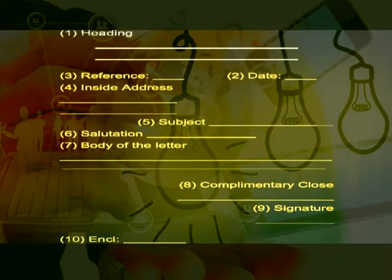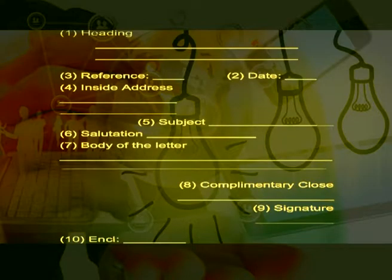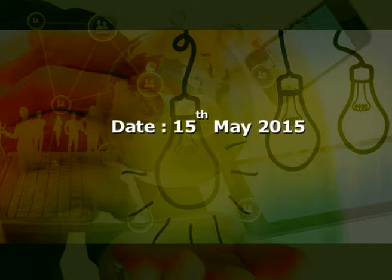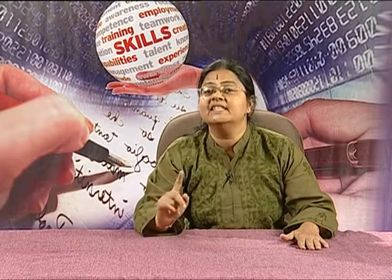Heading: the heading of a business letter has the name and postal address of the firm, email address, website address, telephone number, logo of the firm and so on. The name and address of the firm are usually at the top of the page and at the center. The date is usually written on the right-hand side corner below the heading. It can be written as '15 May 2015' or 'May 15, 2015.' Abbreviations are avoided while writing the date.